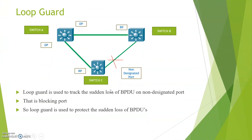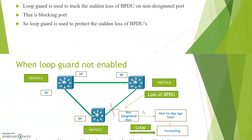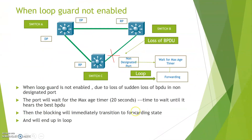Now let us see what Loop Guard is. Loop Guard is used to track the sudden loss of BPDUs on a non-designated or blocking port. Loop Guard is used to protect against the sudden loss of BPDUs.